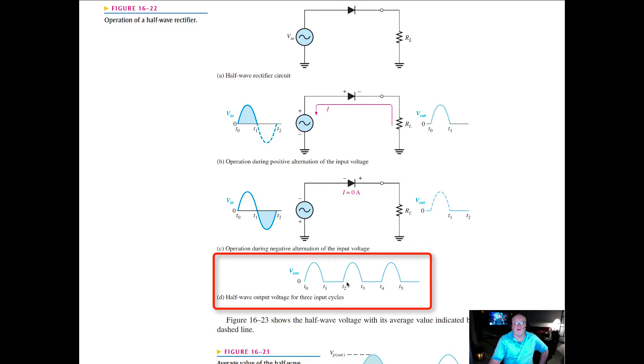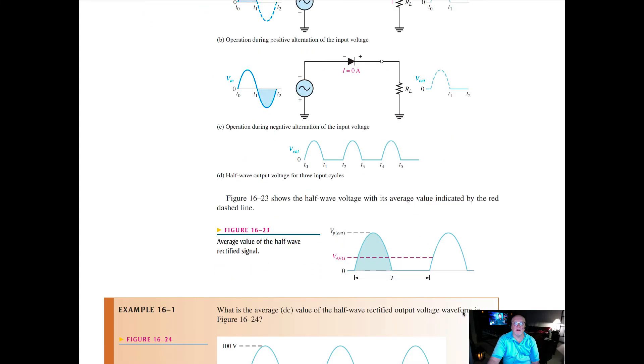From zero to one, one to two nothing, from two to three, three to four nothing, etc. This shows the half wave voltage with its average value indicated in the red below.